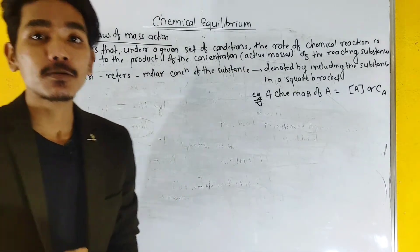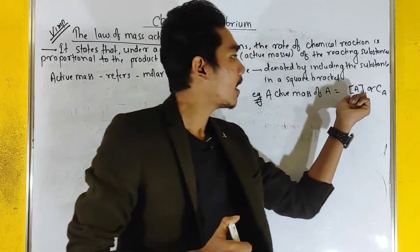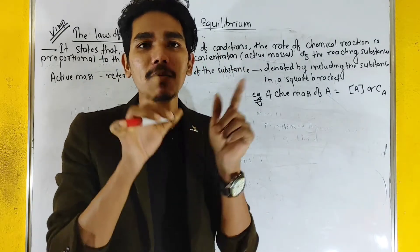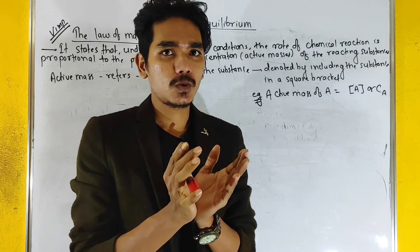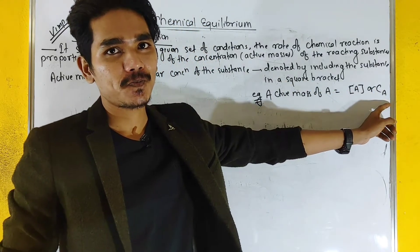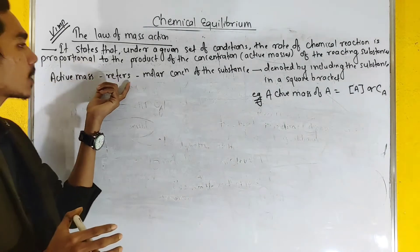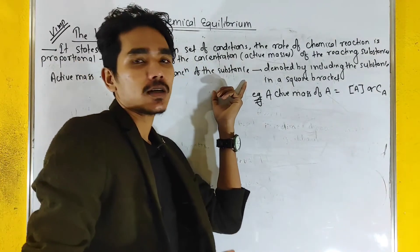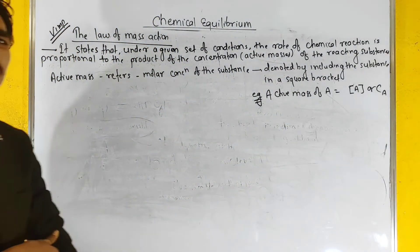What is the active mass? The active mass is noted by the molar concentration of the substance. It is denoted by enclosing the substance in square brackets.